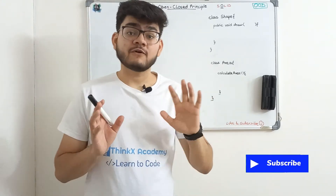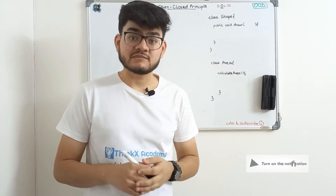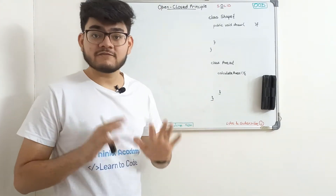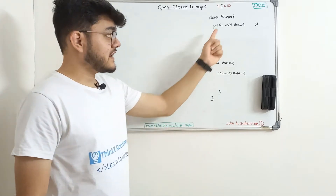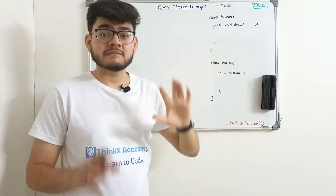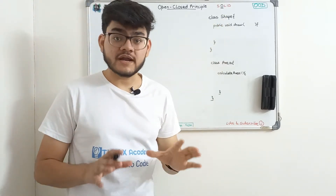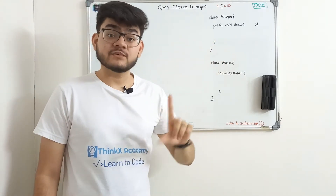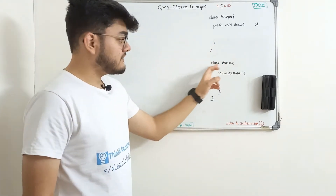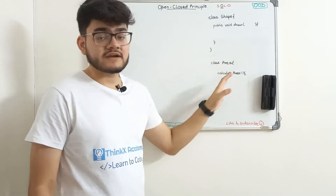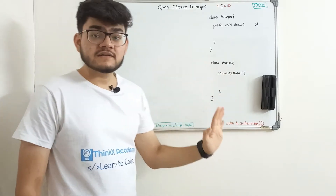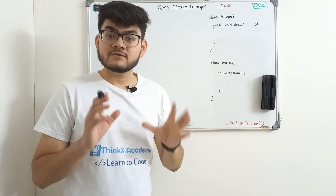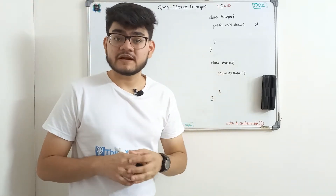In the previous video, we covered the single responsibility principle, which states that if you have a class shape — we're taking the same example for easiness — this class shape has a simple draw function. Since it has only one function, the class has only single responsibility. Now we have a class area, which is to calculate the area, and it is a different class. So we are following the single responsibility principle.